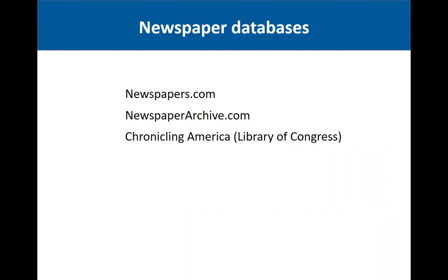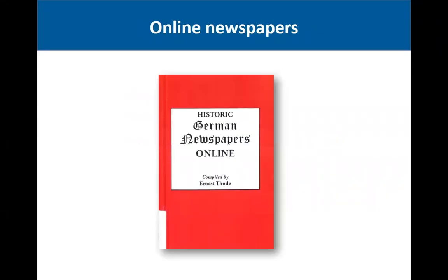Newspapers.com is including more and more German language newspapers in their database, so that is certainly a place to look for German language newspapers published in the United States. Newspaperarchive.com is another newspaper database, and they actually have newspapers published in Germany as well — historic newspapers. Chronicling America, also from the Library of Congress, is digitizing newspapers and putting them on their website. And I would recommend the book Historic German Newspapers Online by Ernest Thode, which includes lists of papers published both in the United States and in Germany.